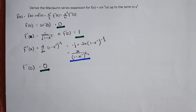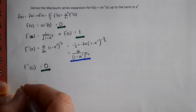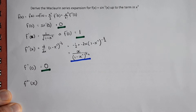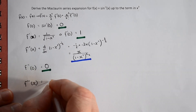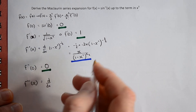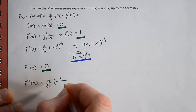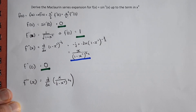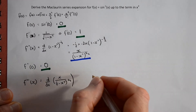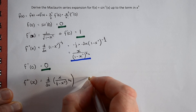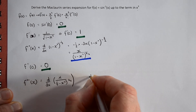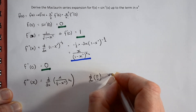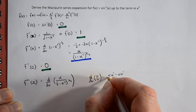We just need one more: the third derivative of x, and then we'll find the third derivative at zero. We're going to differentiate f''(x). We can treat it as a quotient and differentiate using the quotient rule. The rule states: d/dx of u over v equals v times the differential of u, minus u times the differential of v, all over v squared.